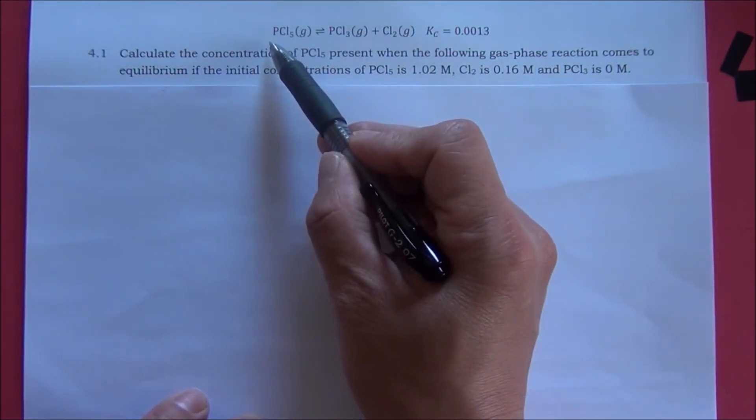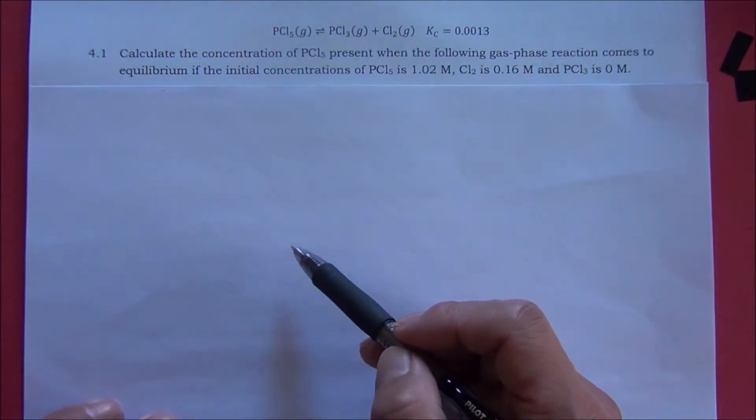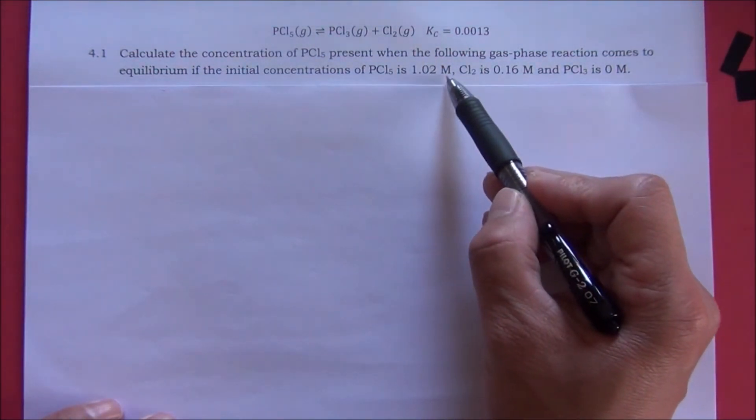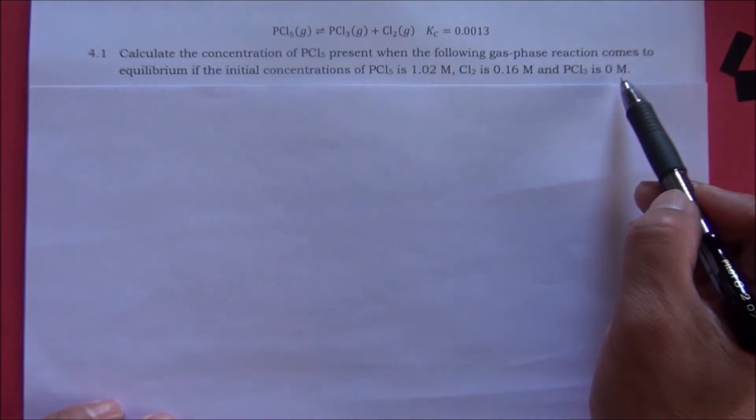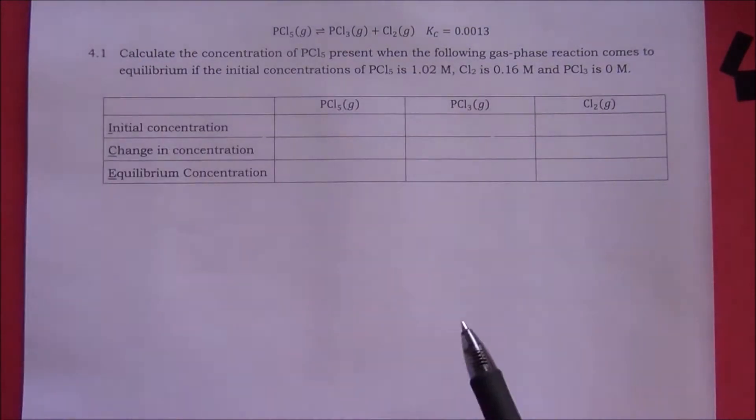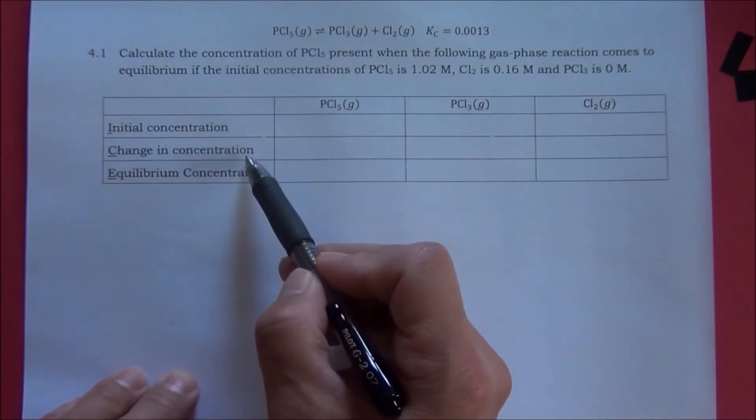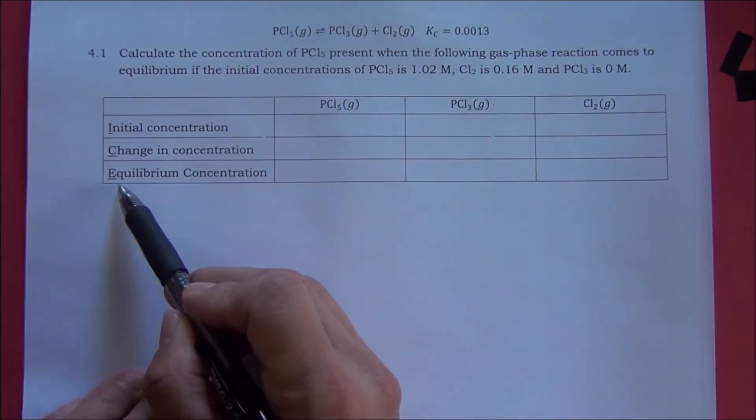Therefore, we need to create three columns for the ICE table. And we are provided the molarity of the chemicals. Therefore, we need to create three rows in the ice table: initial concentration, change in concentration, and equilibrium concentration.